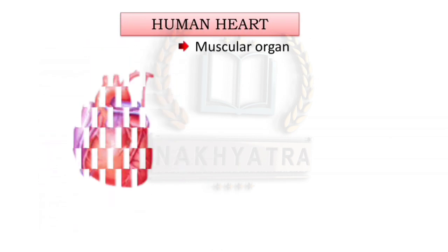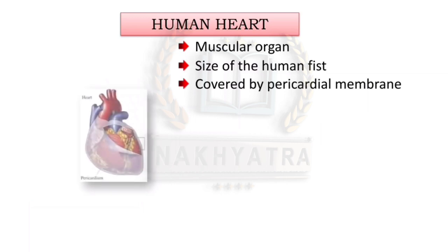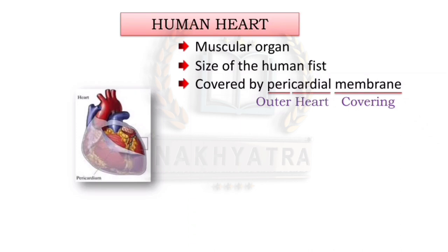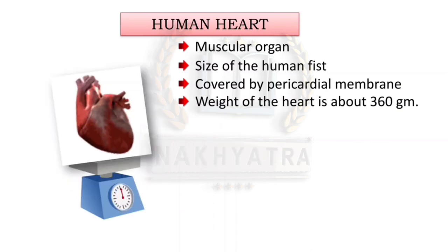The human heart is a muscular organ. The size of the human heart is approximately the size of a human fist. The human heart is covered by the pericardial membrane. 'Peri' means outer, 'membrane' means covering, and 'cardial' means heart — so pericardial means the outer covering of the heart.